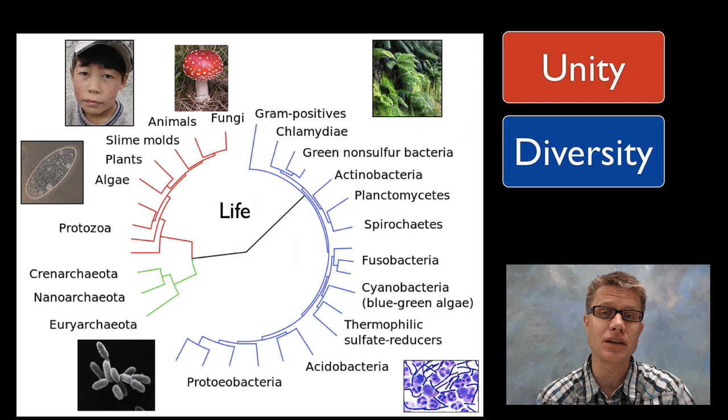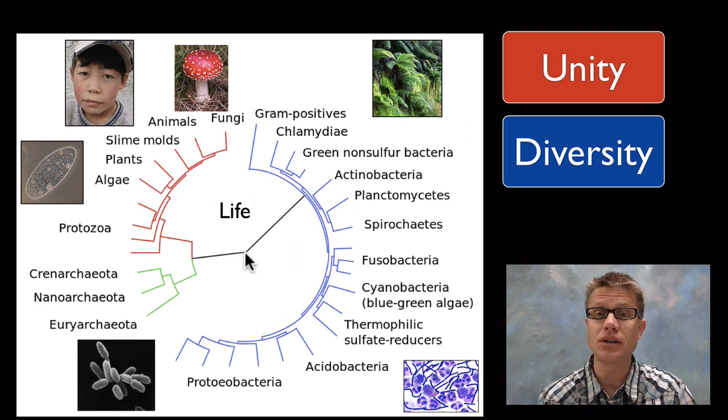And when you're looking at life, the one thing that jumps out is the diversity of life. Look at all the different forms of life we have—from the archaea to protozoans, animals, fungi, plants, and bacteria. This is a branching tree of life. And the one thing that jumps out is how different it all is. And so the unity is missing. But there's going to be clear unity within life as well.